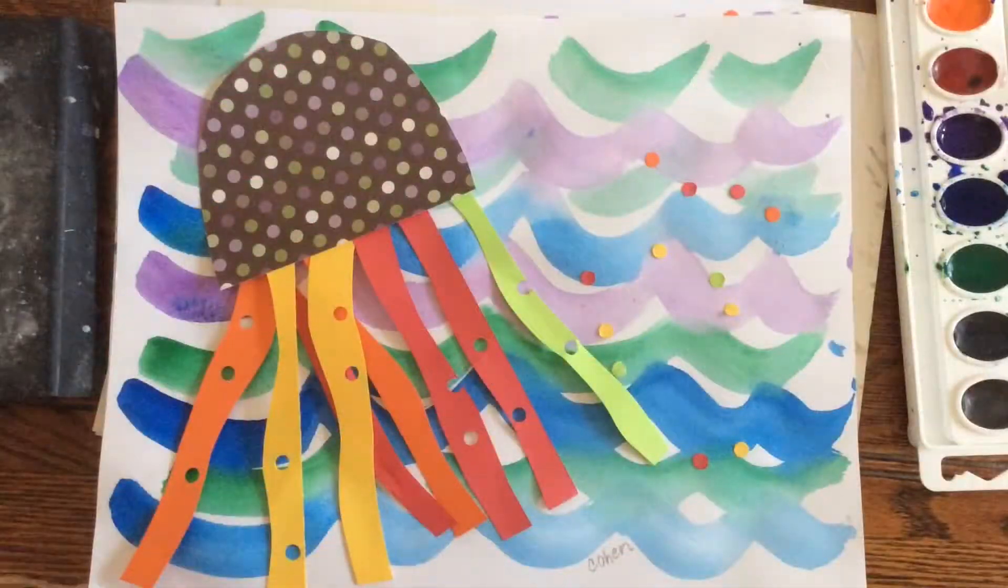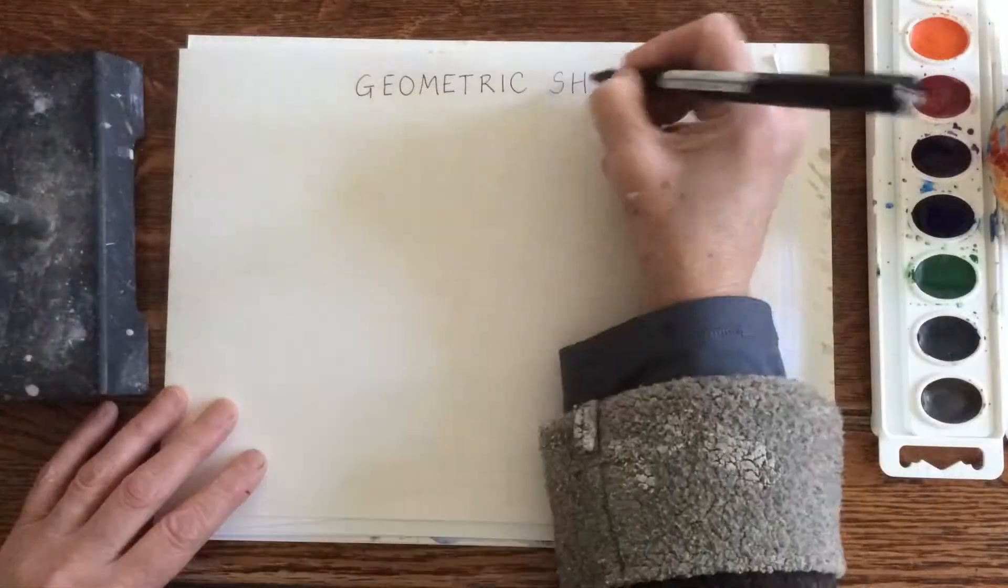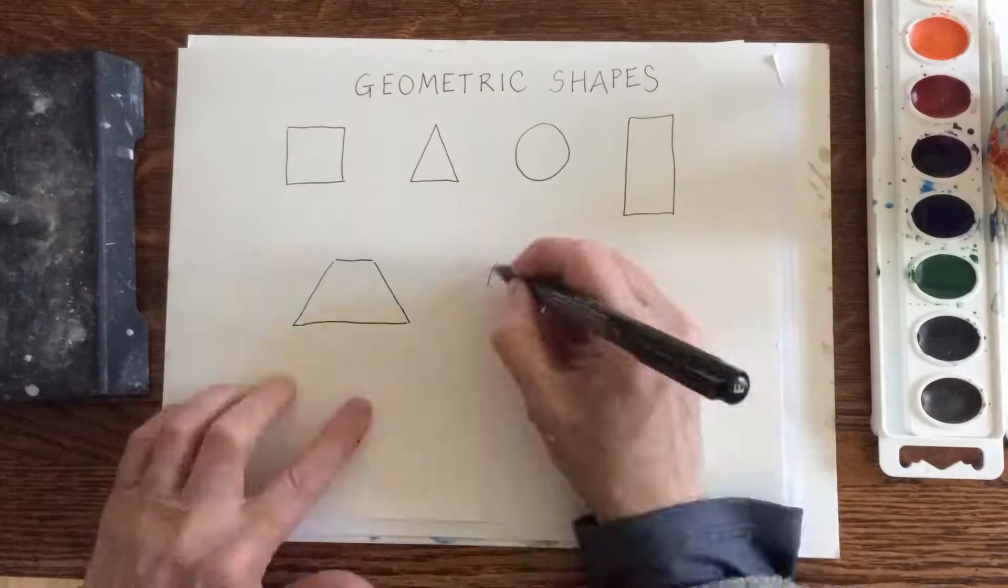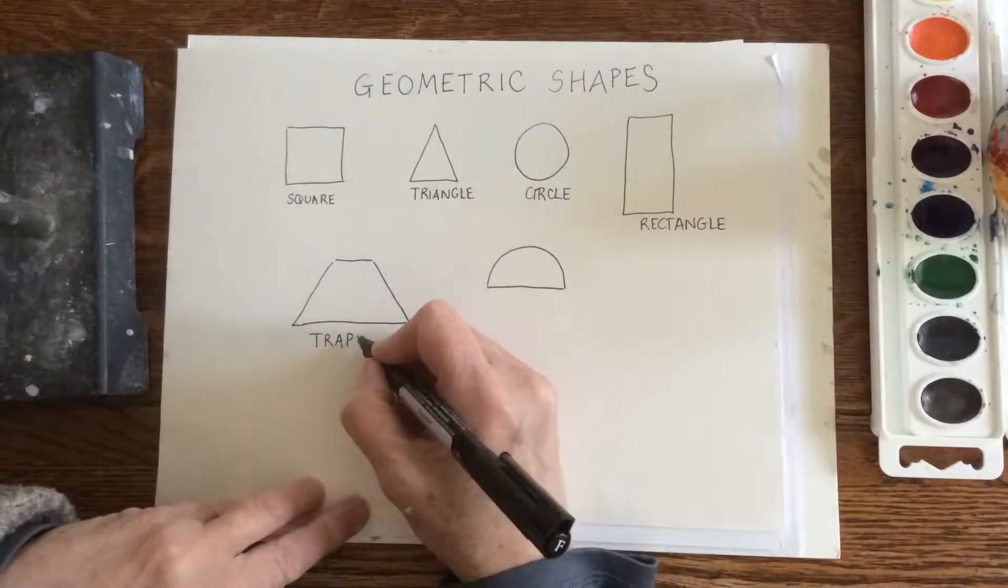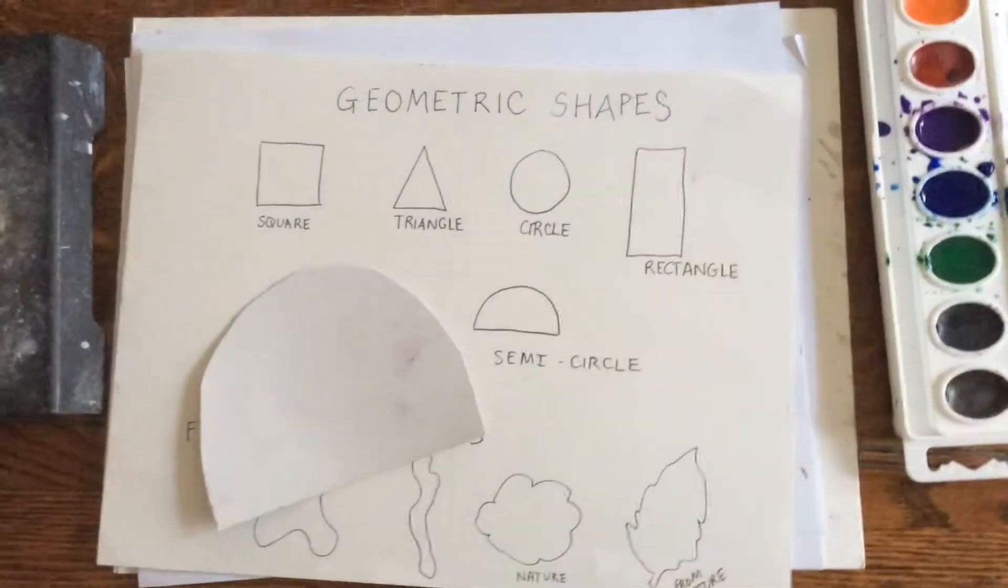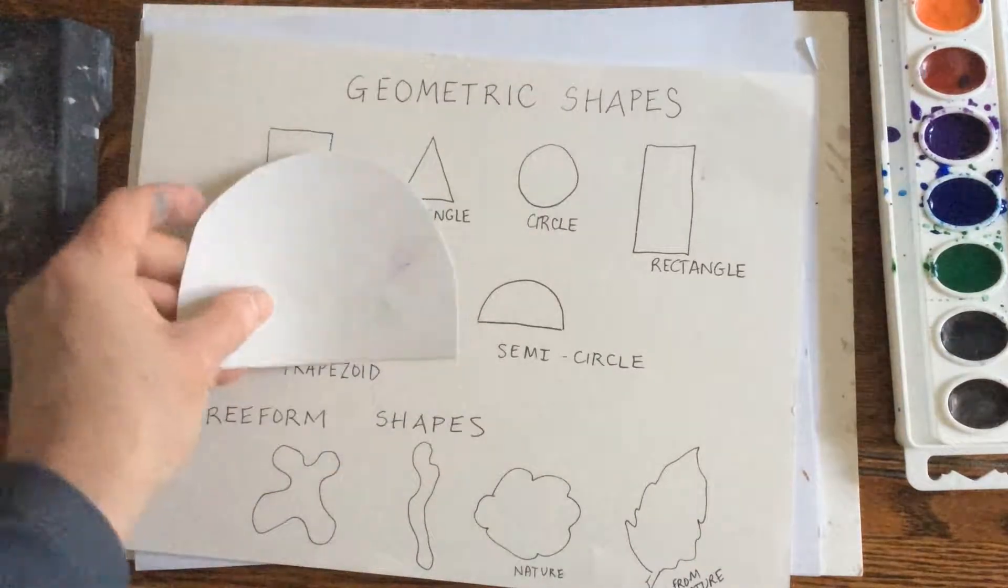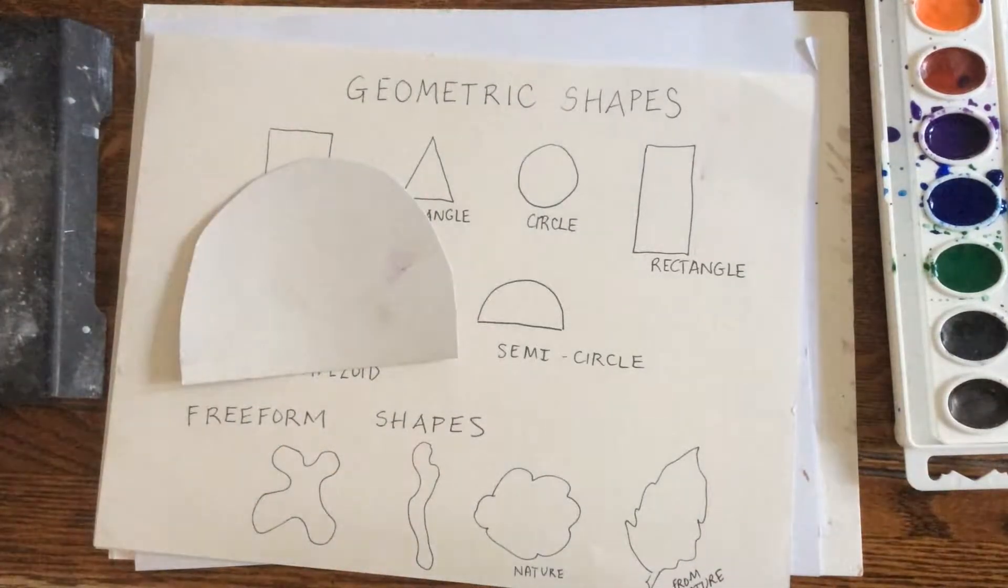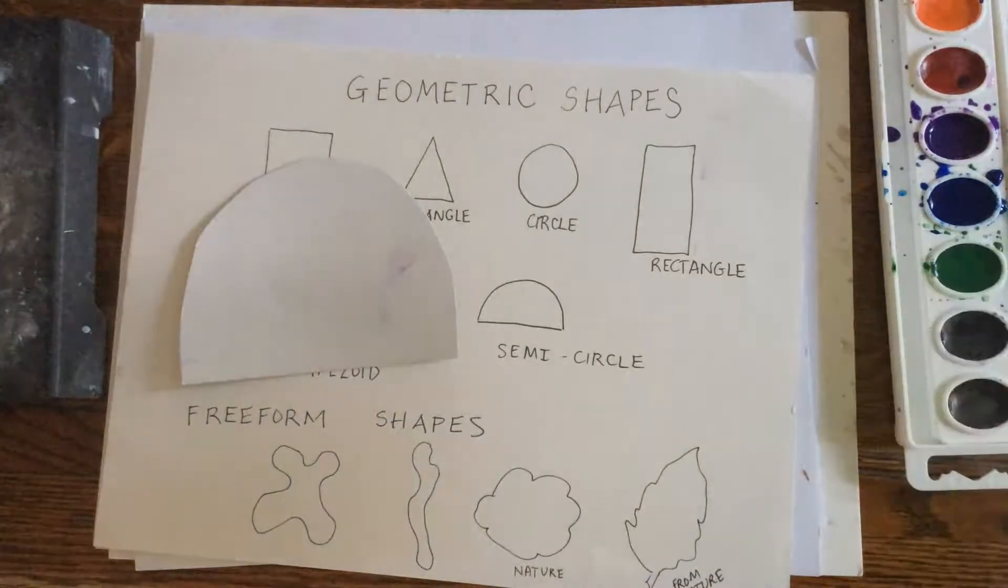This week we're going to make a squid using different kinds of shapes. Artists group shapes into geometric shapes and free-form shapes. For the squid's body, we're going to use a geometric shape, a semicircle. You know its name and we use that shape in math.